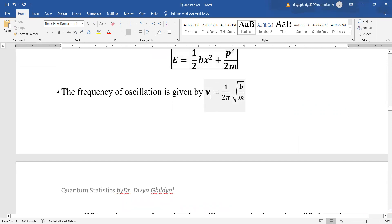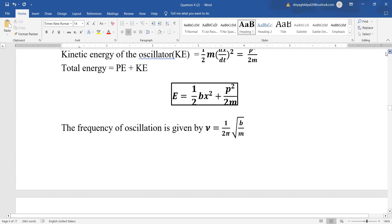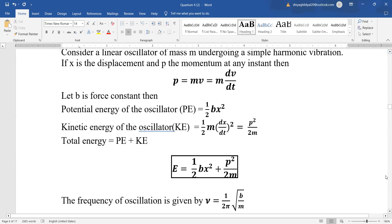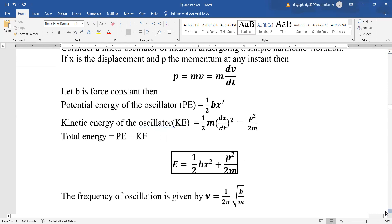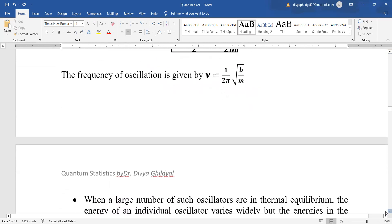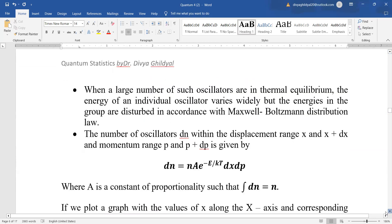Frequency of oscillator is given by μ equal to 1 upon 2π under root b upon m where b is a constant. So, we put this formula here. It is very easy. Once, just understand the terms.